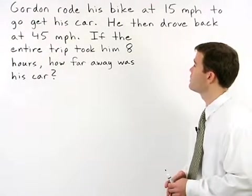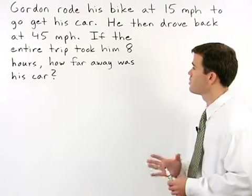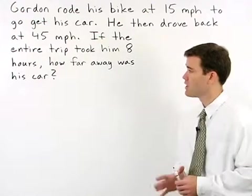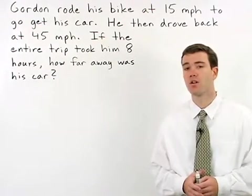Gordon rode his bike at 15 miles per hour to go get his car. He then drove back at 45 miles per hour. If the entire trip took him 8 hours, how far away was his car?